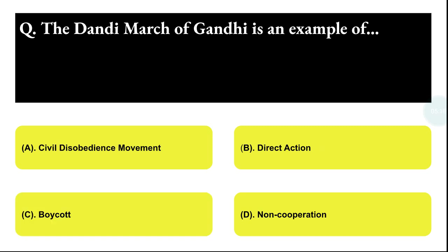Next question: the Dandi March of Gandhi is an example of which of the following? Option A: Civil Disobedience Movement, Option B: Direct Action, Option C: Boycott, Option D: Non-cooperation. The correct answer is option A, that is Civil Disobedience Movement.